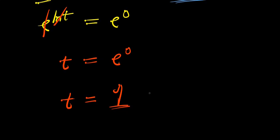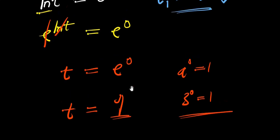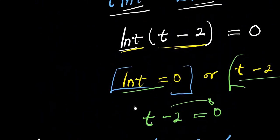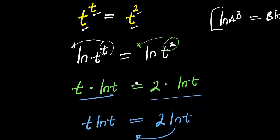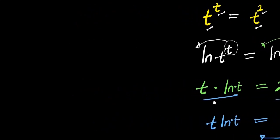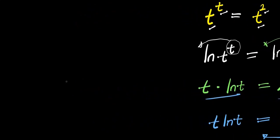Remember: any number (except zero) raised to the power of zero is one. For example, a^0 = 1 and 3^0 = 1. Now let's consider the second method. We recopy the problem: t^t equals t^2.